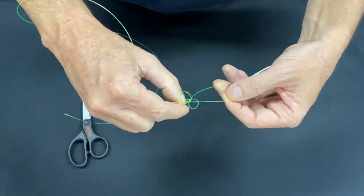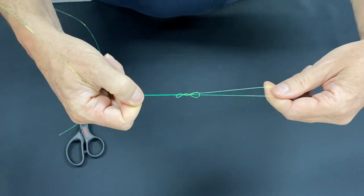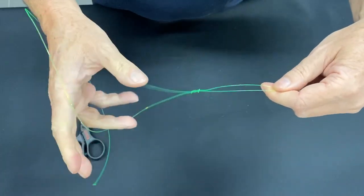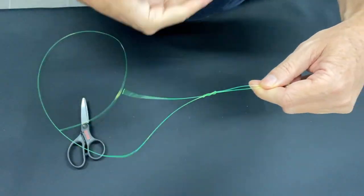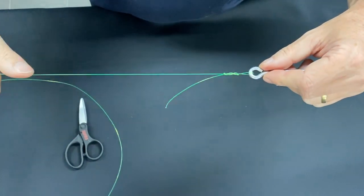Now just stretch out the line to make a nice figure 8 like that. Just pull him in a bit tight. Now just lubricate it a little bit so it stays nice and slippery.